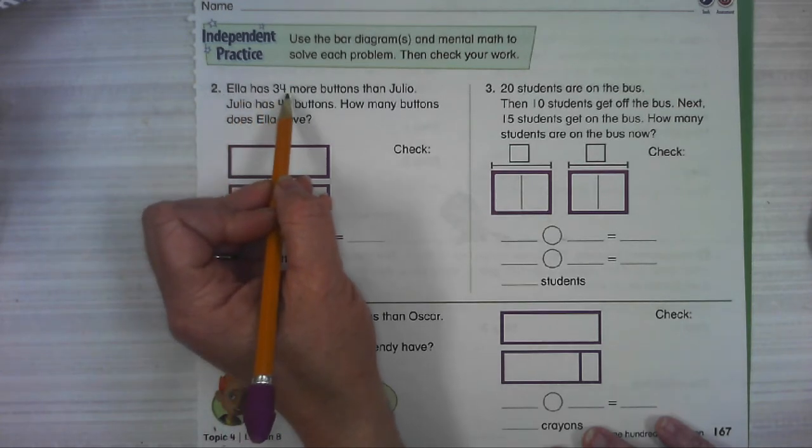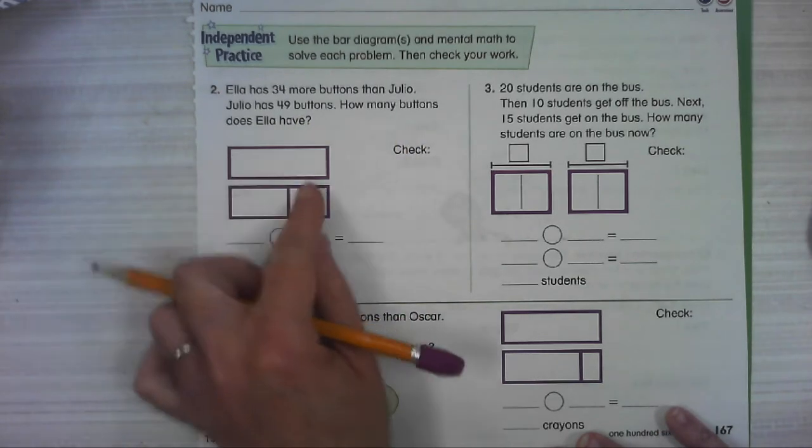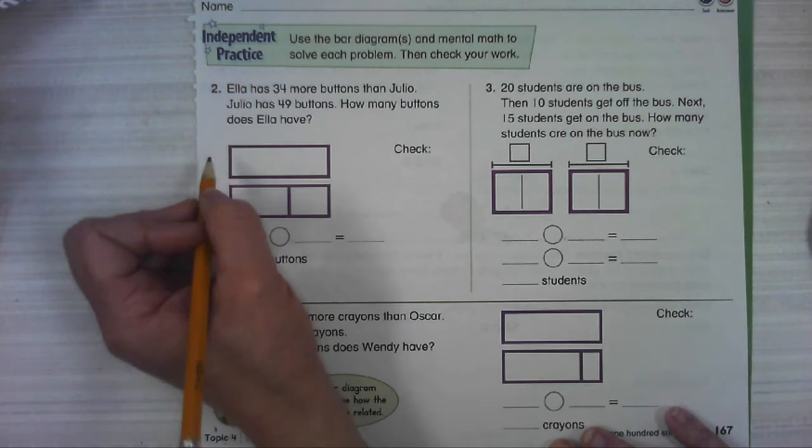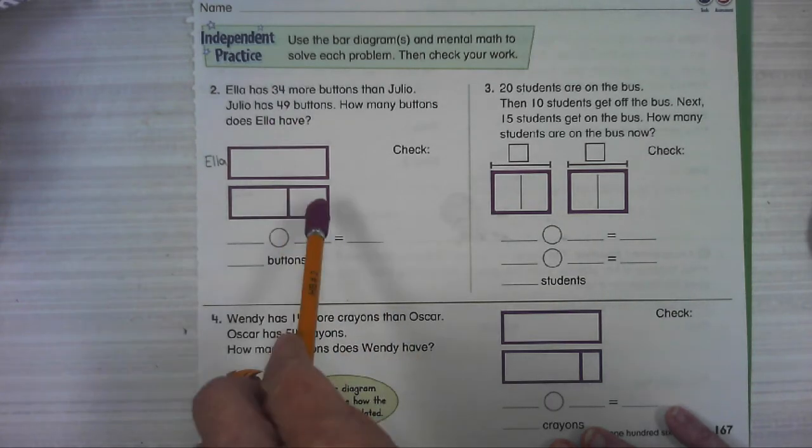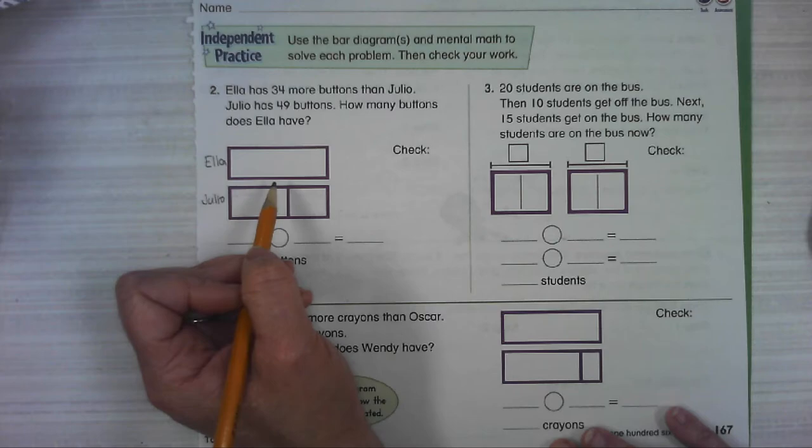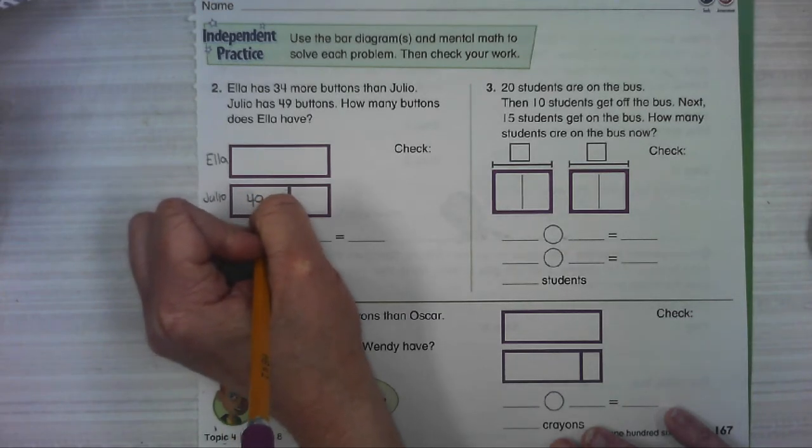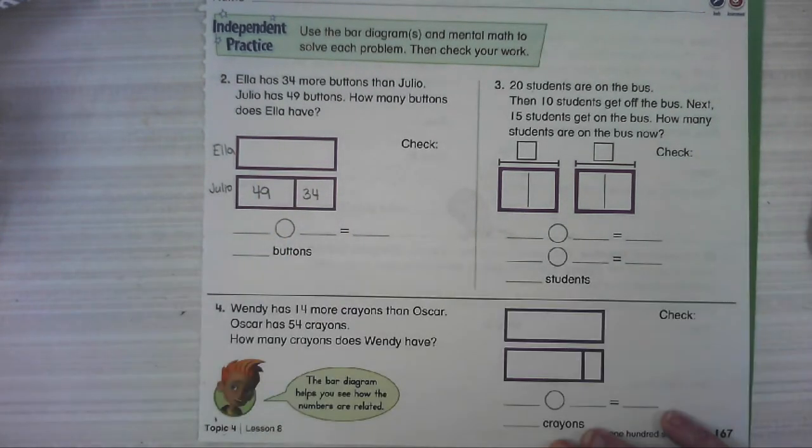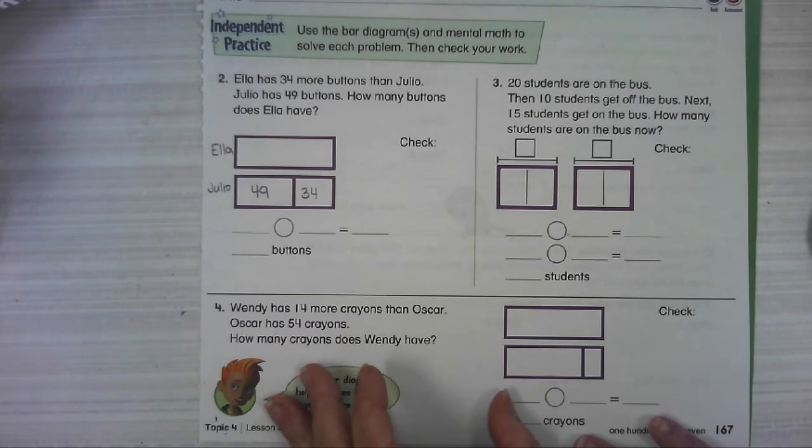Number two. Ella has 34 more buttons than Julio. Julio has 49 buttons. How many buttons does Ella have? So here we've got two bars because we have two people. The one who has more is Ella. So her bar is big and it's not broken. We can see that for sure because we can say Ella has more buttons than Julio. So this one's Julio's. Do we know how many buttons Ella has? No. Julio has 49 buttons. Ella has 34 more. So if we add 34 to Julio's, that would make what Ella has. So now, how are you going to figure out how many Ella's got? I think you can do it from there.